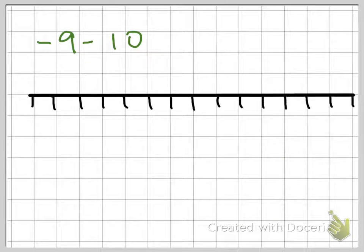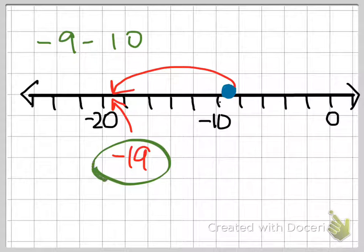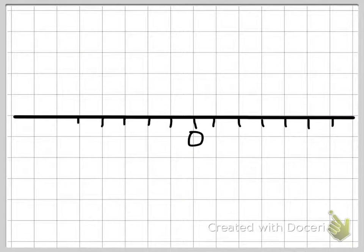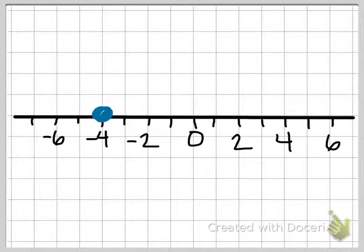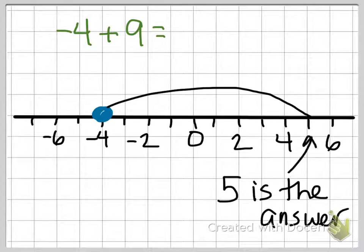In this example, negative 9 minus 10. I'm starting at negative 9, moving to the left, exactly 10 spaces, giving me a final answer of negative 19. In this example, negative 4 plus 9, negative 4 is where I start. I'm going to move to the right, a total of 9 spaces, landing me exactly at 5, which is my answer.